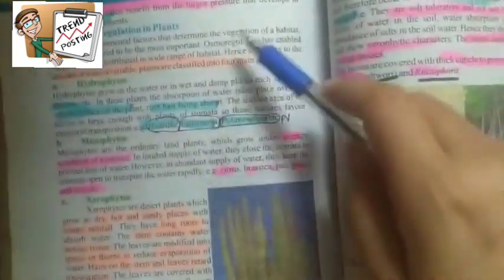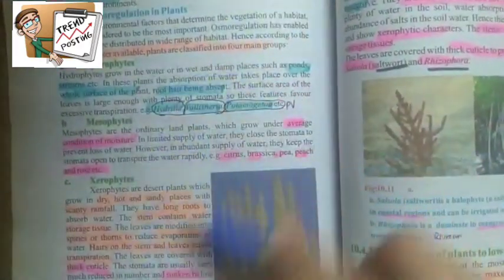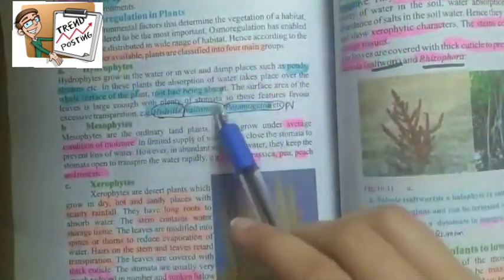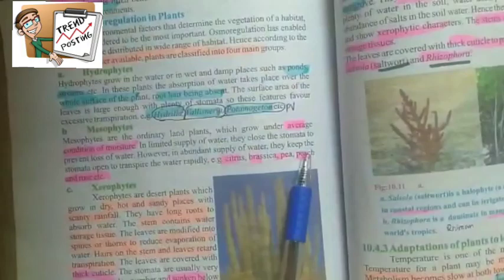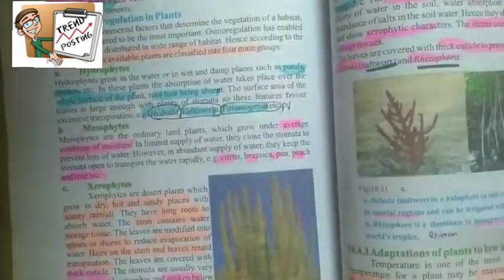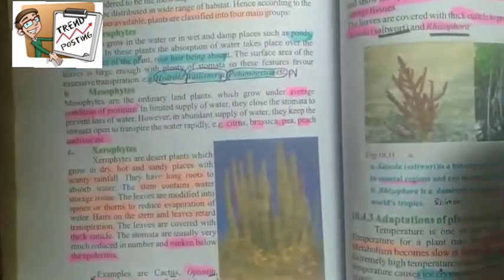Let's start with osmotic regulation in plants. You need to know about hydrophytes, mesophytes, xerophytes, and halophytes. These are all examples you need to know about.